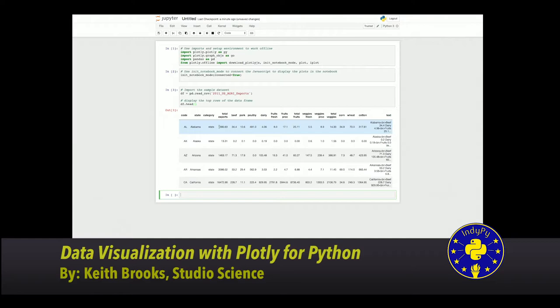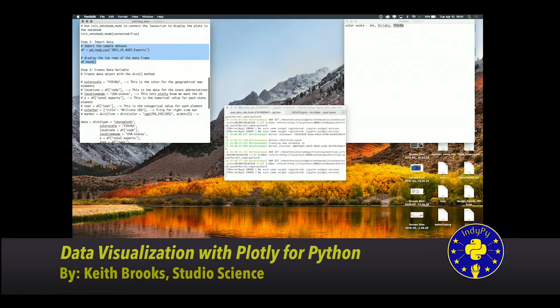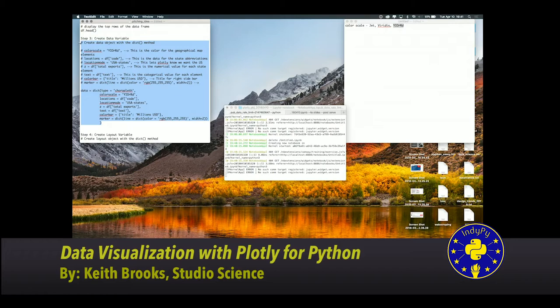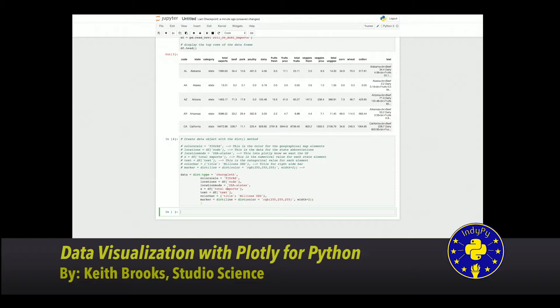So the next thing I need to do is I need to start using the choropleth piece and I need to create a data object. So basically what this data object does is, one, I want to identify what type of plot I want to make, and here I'm doing a choropleth. Second, I want to identify what type of color scale, and that just gives me a visual reference, a better visual reference. To the locations, basically df brackets code allows me to target that series.